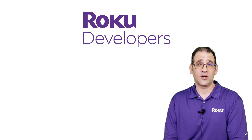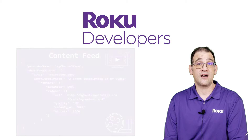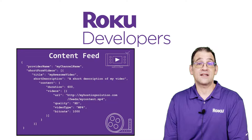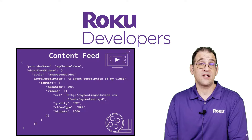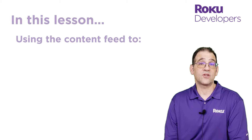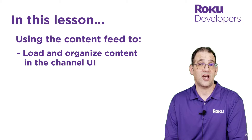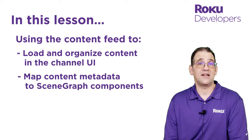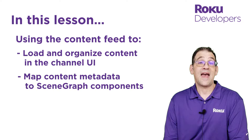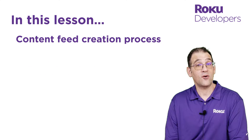One of the primary tasks in building a Roku channel is creating the content feed. The feed connects the content in your catalog with your Roku channel and provides all the information needed to display and launch video and audio content. In this lesson, we'll discuss how the content feed is used to load and organize content in the channel UI, review how the content node maps metadata in your content feed to the scene graph components in your channel UI, and provide a few tips for creating your own feed.